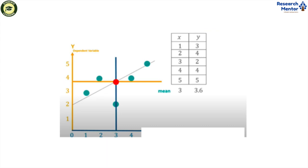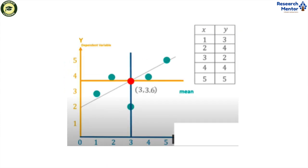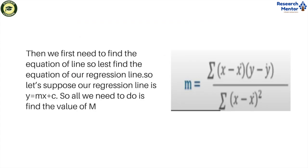After that, we calculate mean values of x and y. The mean value of x is 3 and the mean value of y is 3.6. Then we first need to find the equation of line. Let's suppose our regression line is y equals mx plus c.